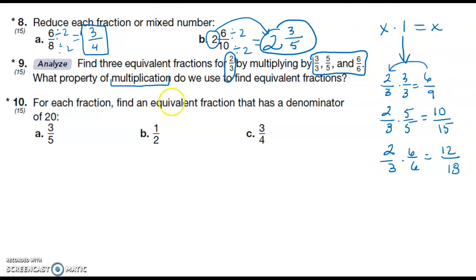Number ten: For each fraction find an equivalent fraction that has a denominator of twenty. So five times what gives me twenty? Four. So that's 12/20. And two times what gives me twenty? Ten. 10/20. Four times what gives me twenty? Five.